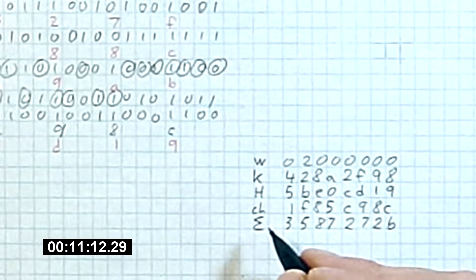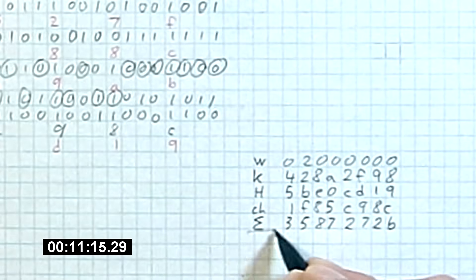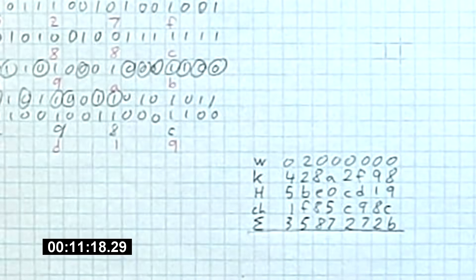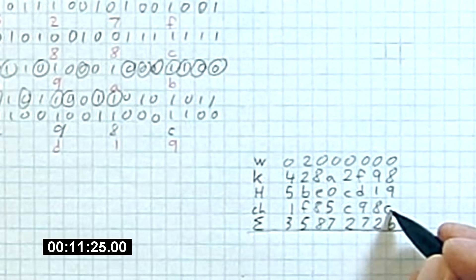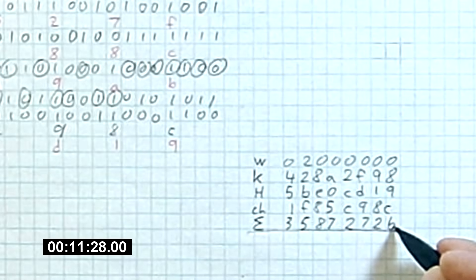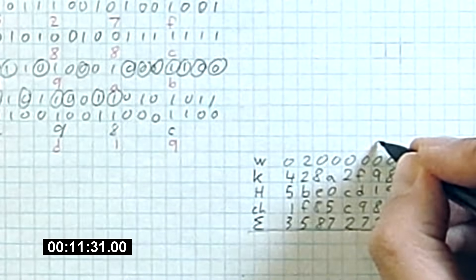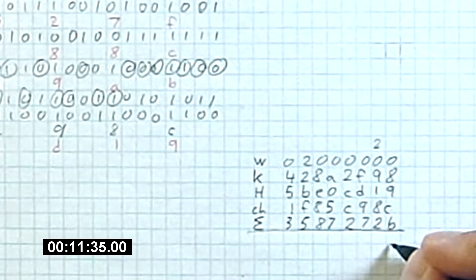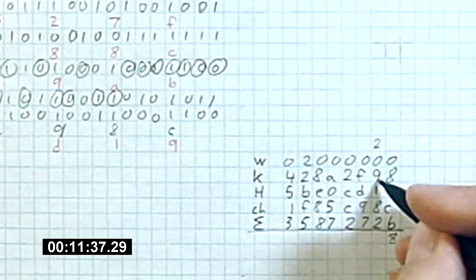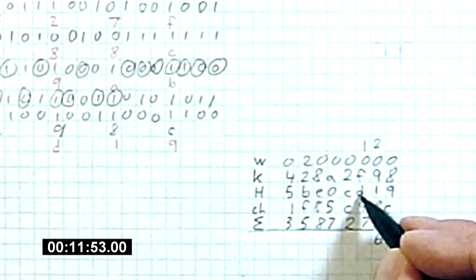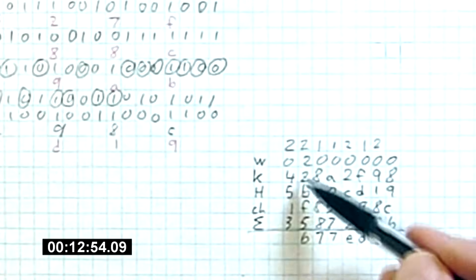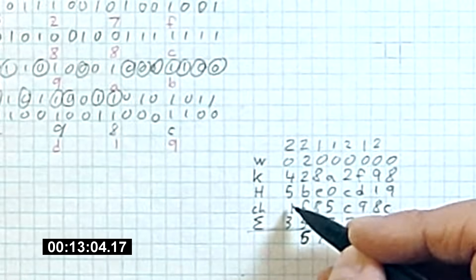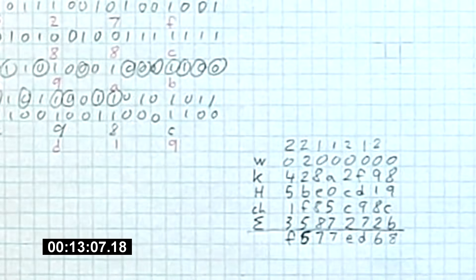Now we add these values up in hexadecimal — plain arithmetic except base 16, which makes it a little tricky. 8 and 9 is 17; 12 is 29; 11 is 40, which is 32 plus 8; carry the 2; 16 plus 16. 2 and 9 is 11; 12 and 8 is 20; carry the 1; 1 and 15 is 16. Our first sum result is F577ED68.